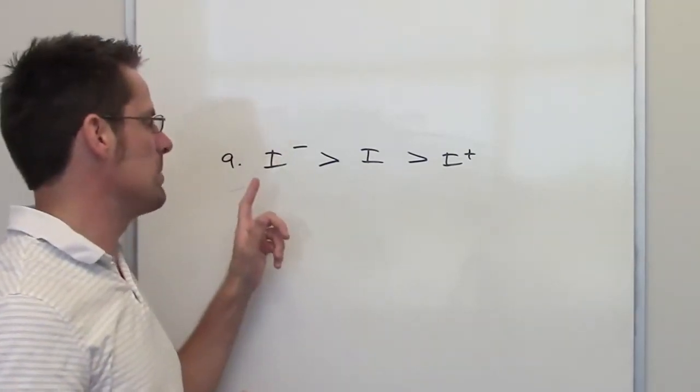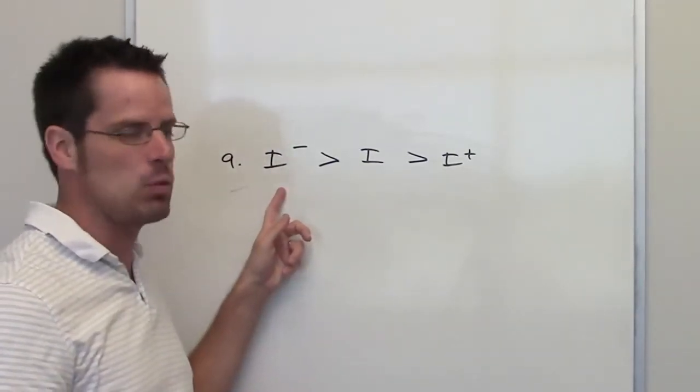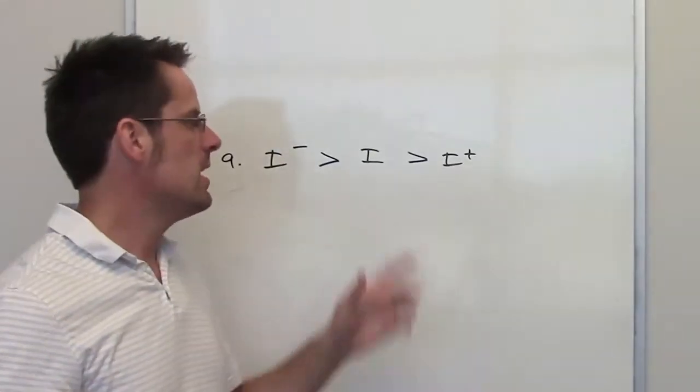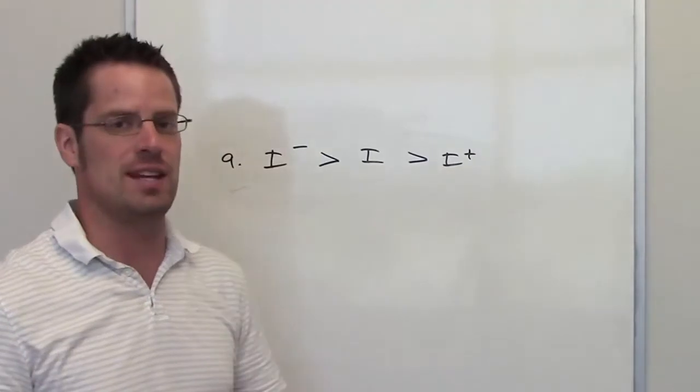Therefore, the one with the most electrons, iodide, will be larger than neutral iodine, which will be larger in size than iodine that has lost an electron, that is, iodine cation.